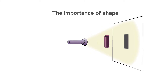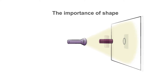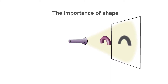If the cylinder is hollow and vertical, the shadow remains a rectangle. If the cylinder is hollow and horizontal, the shadow is a circle. If the cylinder is curved, the shadow will be an arch.